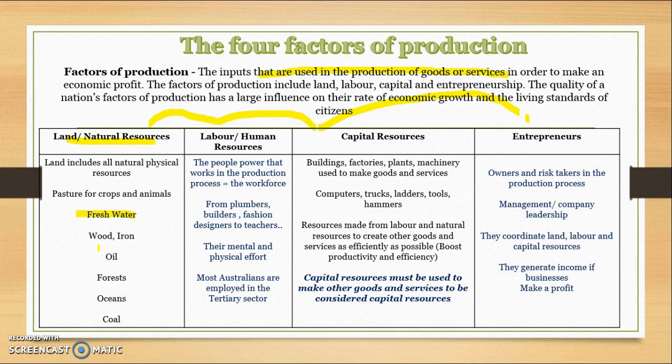Capital resources are basically land resources being turned into future products — the man-made products that help in the production process. That includes buildings, factories, plants, machinery, computers, trucks, ladders, tools, and so on — resources made from labour and natural resources to create other goods and services.